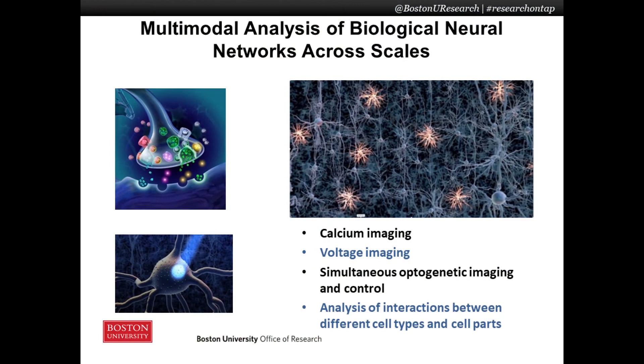For example, over a decade ago, we developed optogenetic techniques in which we use rhodopsins found in archaea — light-sensitive proteins — and put them on neurons. This allows us to control individual neurons of specific cell types with light, either activating or silencing them.